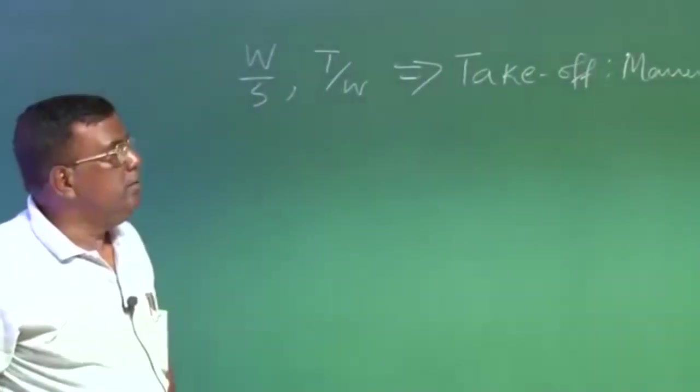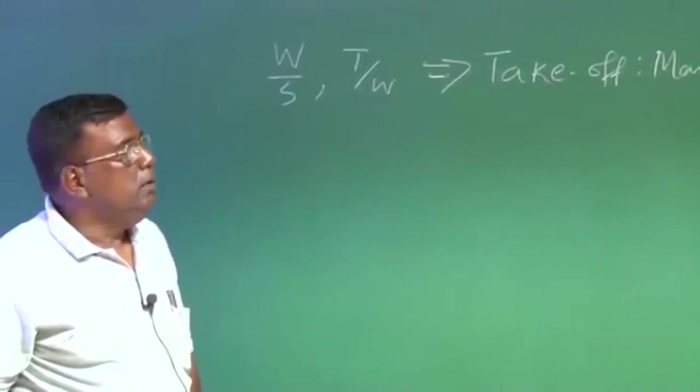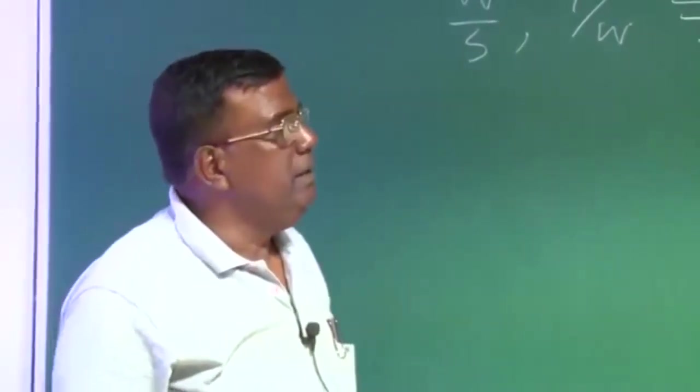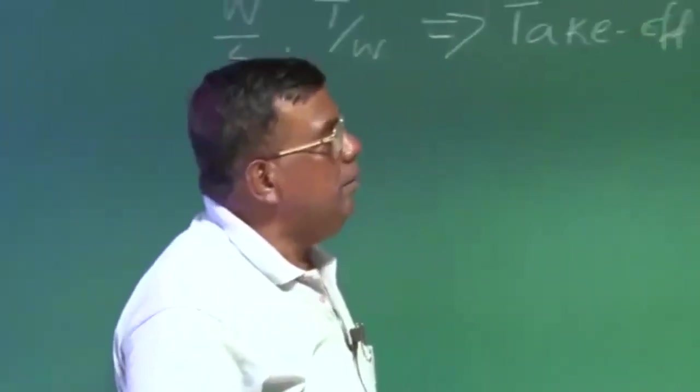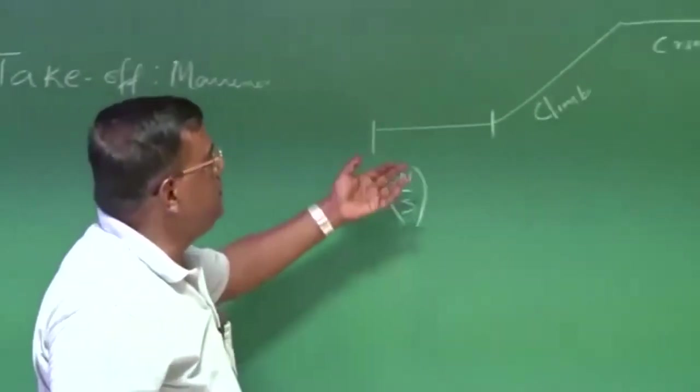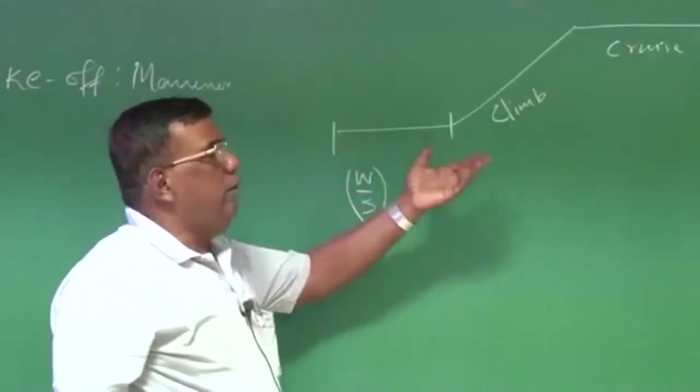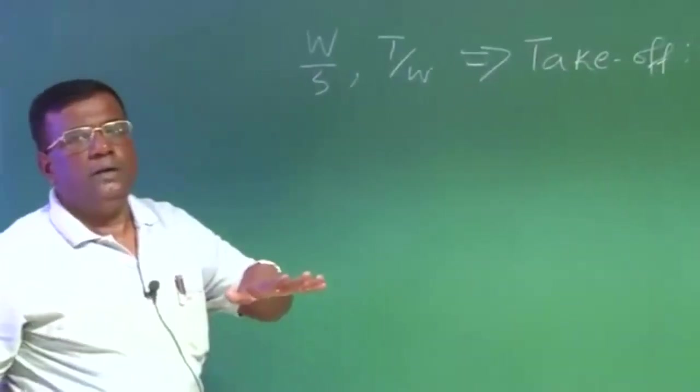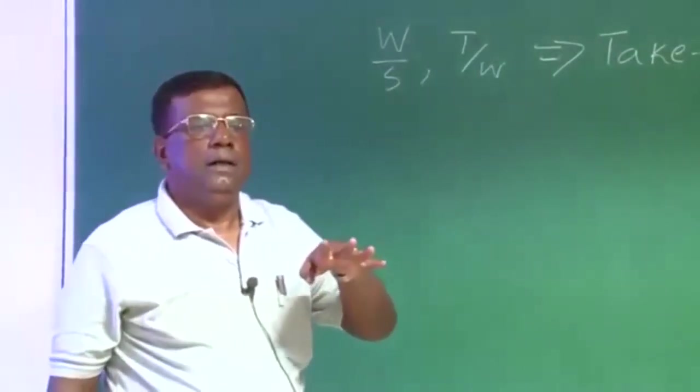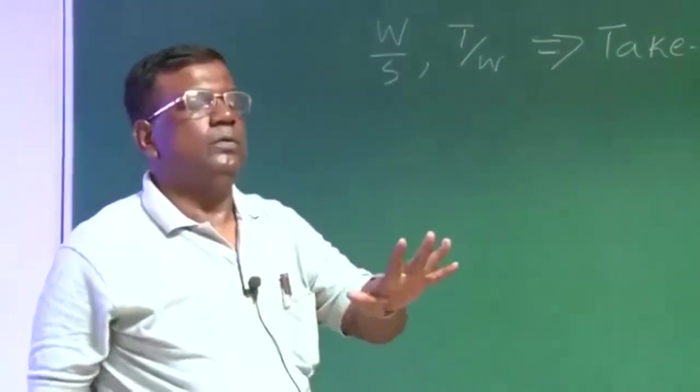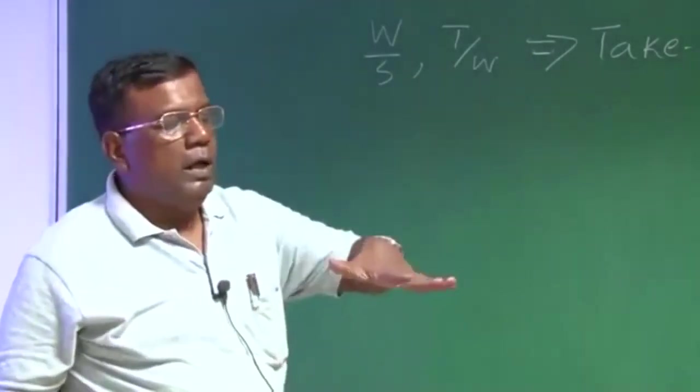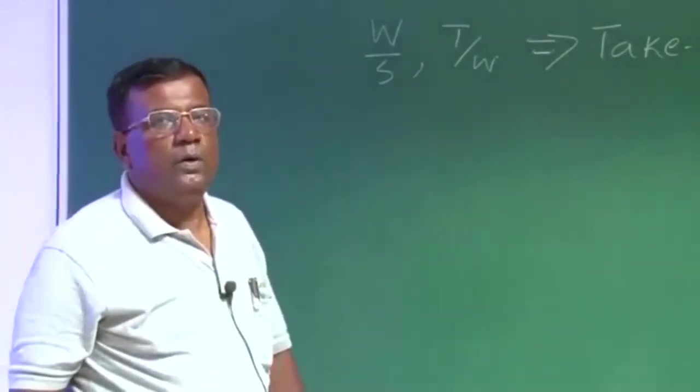This takeoff and landing are two very important operations because you understand most of the accidents you will find, may be minor, may be serious, happen during takeoff or landing. For example, if you are trying to takeoff and you have not attained the required speed and you try to takeoff and you increase the angle of attack, it may go into a stall. It can fall like this, we call premature takeoff.